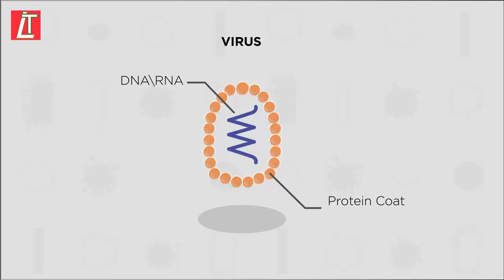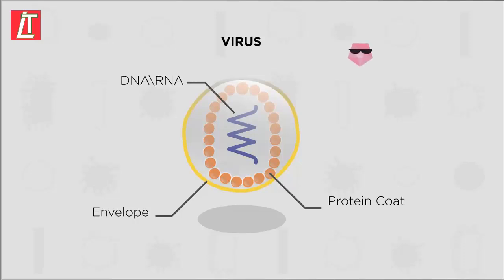Sometimes, a membrane called an envelope surrounds a virus particle. This envelope isn't made by the virus, but is actually stolen from the membrane of the host cell. This is a great strategy by the virus — it makes it harder for the host cell to identify the virus as foreign.